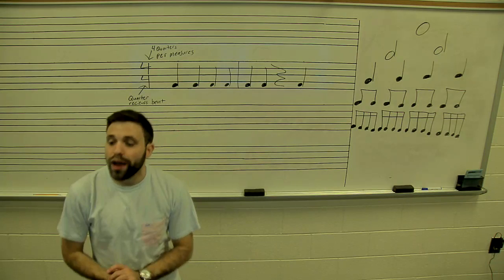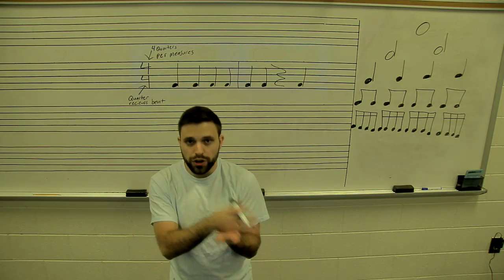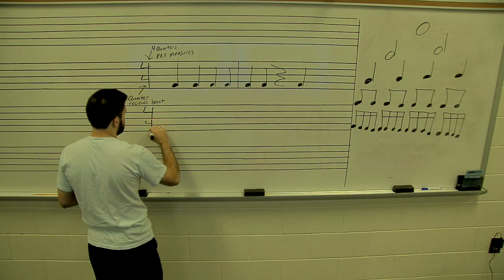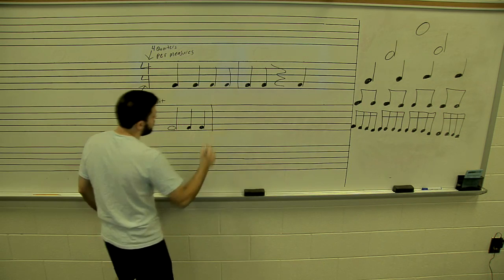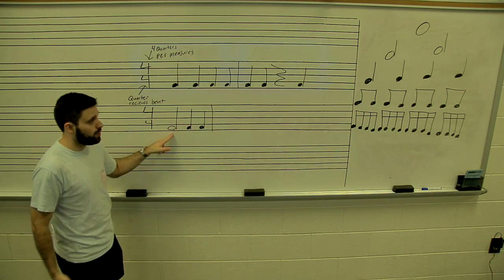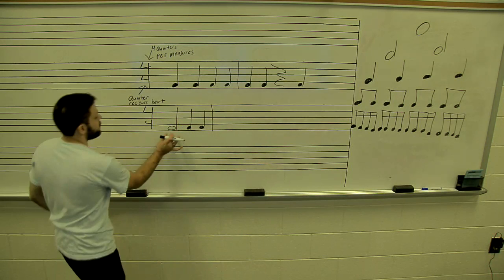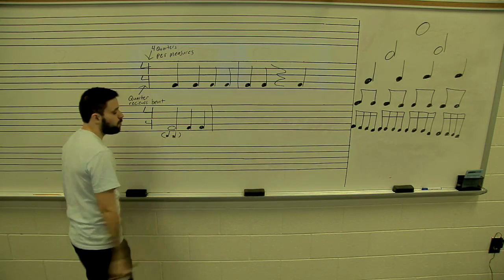So when writing in 4/4, we have to have four quarters' worth per measure. A measure could be four quarter notes — that fulfills the requirement of four quarters. It could also include a quarter rest: for example, three quarter notes and then a quarter rest, since a quarter rest has the same value as a quarter note.